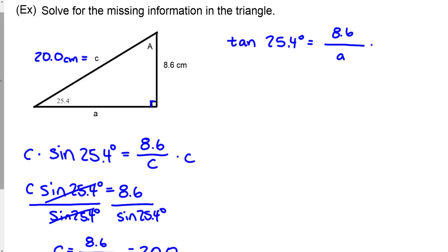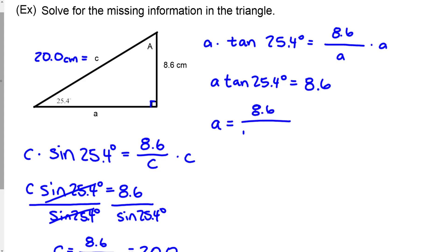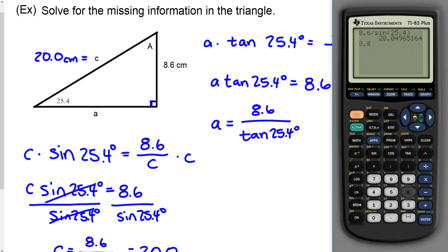So I multiply both sides by A, giving A times tangent of 25.4 degrees equals 8.6. Then dividing both sides by tangent of 25.4 degrees gives A equals 8.6 over tangent of 25.4 degrees. On the calculator, 8.6 divided by tangent of 25.4 gives 18.1. So this side length is 18.1 centimeters.